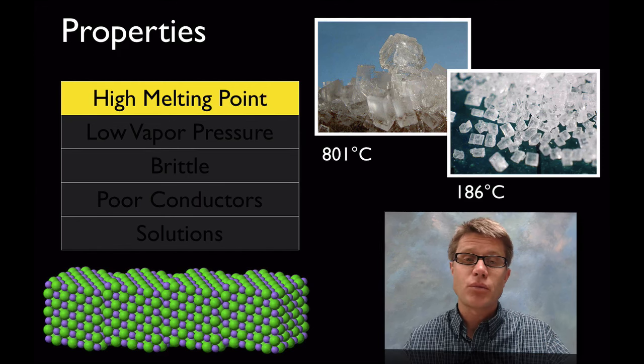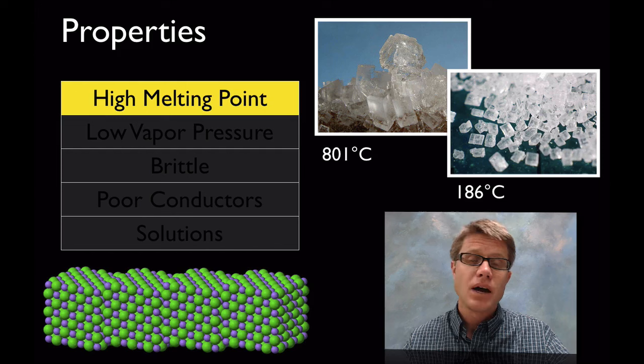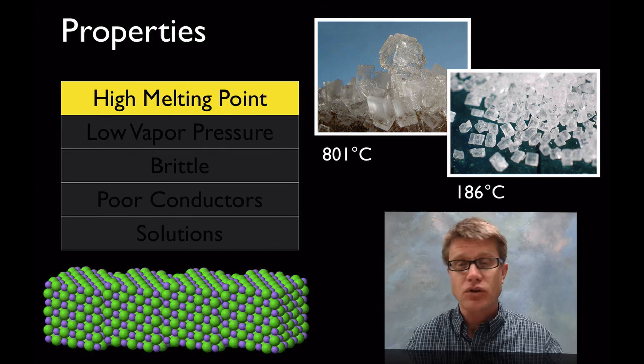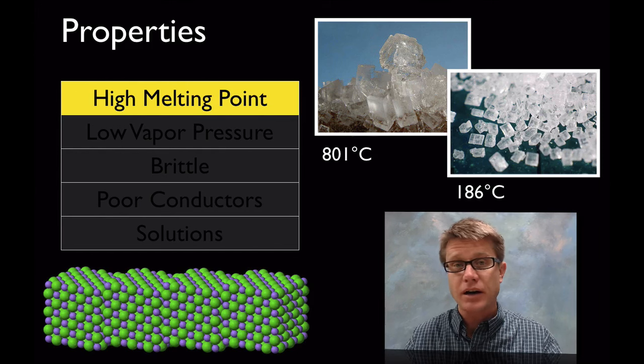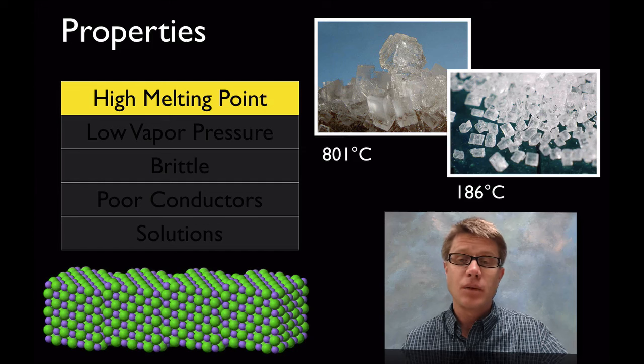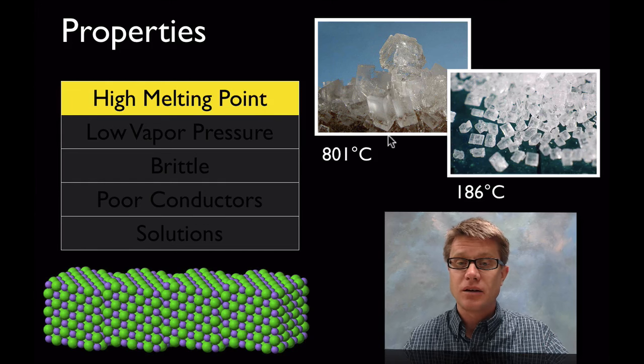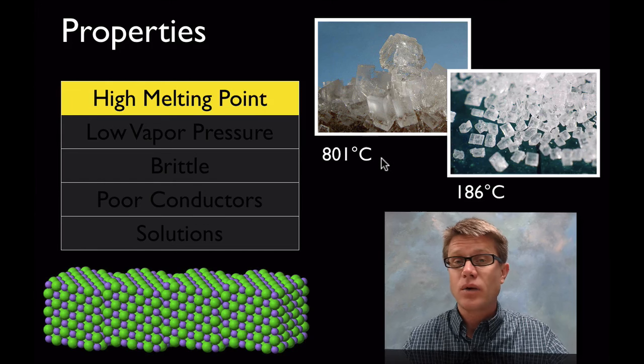You should understand the different properties. What's one big one? High melting points. Since these are attracted together with a really strong ionic bond we're going to have high melting points. This is salt right here.